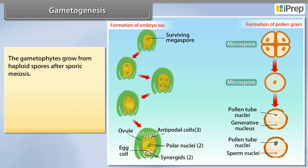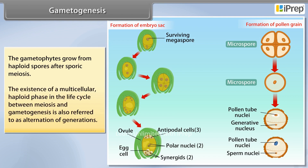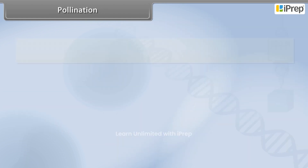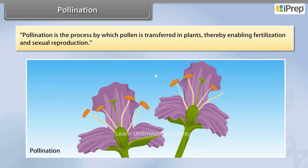The existence of a multicellular haploid phase in the life cycle between meiosis and gametogenesis is also referred to as alternation of generations. Pollination is the process by which pollen is transferred in plants, thereby enabling fertilization and sexual reproduction.